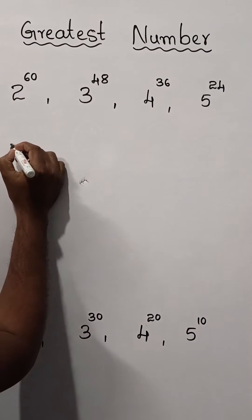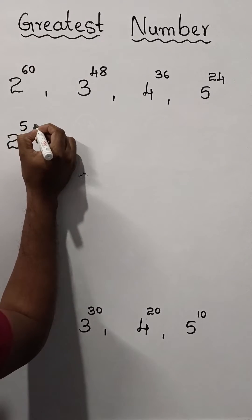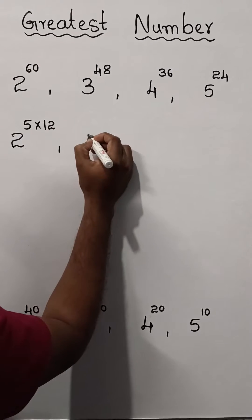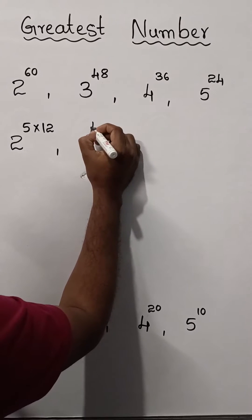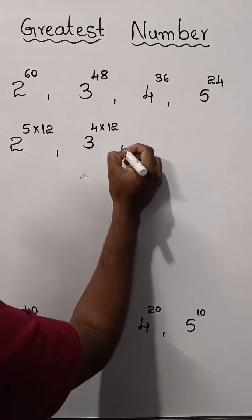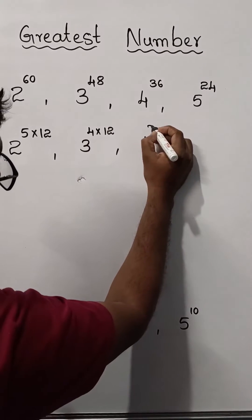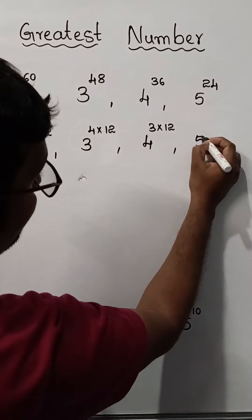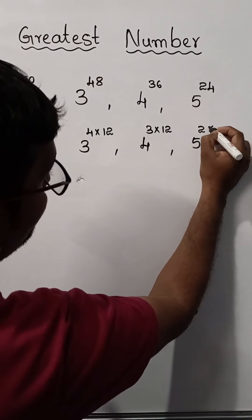2 power 60 can be written as 5 into 12, and 3 power 48 as 4 into 12. 4 power 36 as 3 into 12, 5 power 24 as 2 into 12.